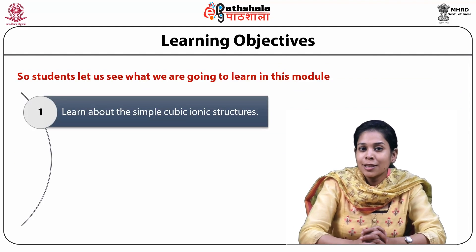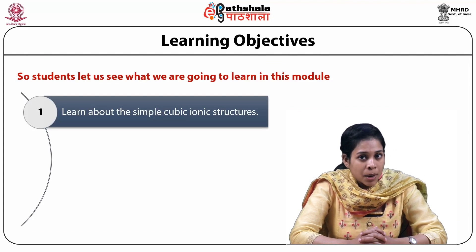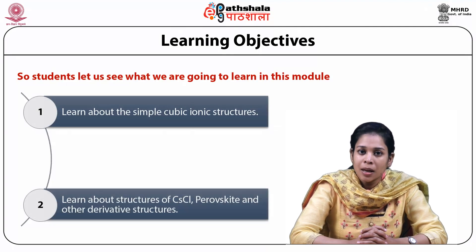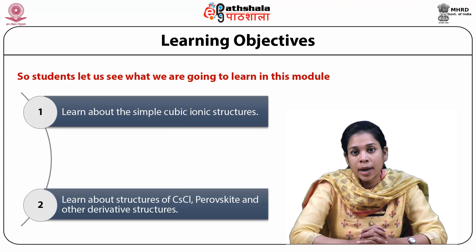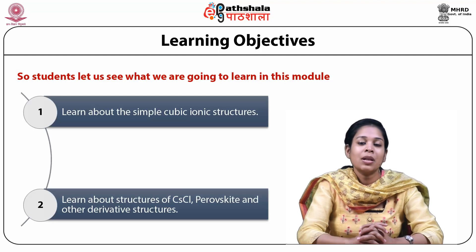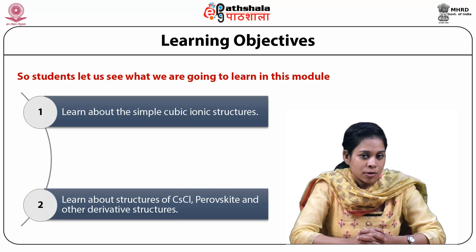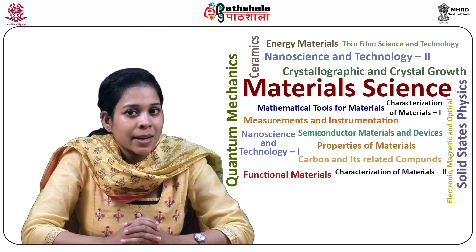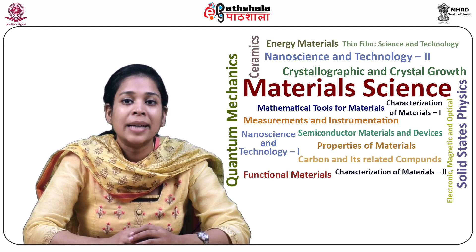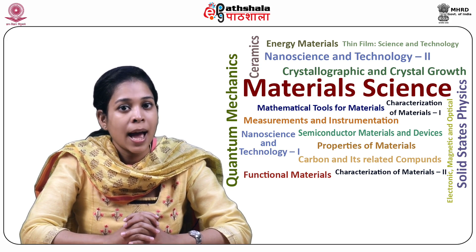So students, let us see what we are going to learn in this module. We will be learning about simple cubic ionic structure, then about the structures of cesium chloride (CsCl). Next we will be reading about perovskites and other derivative structures. The properties of ceramic materials, like all materials, are dictated by the types of atoms present and the type of bonding between the atoms.